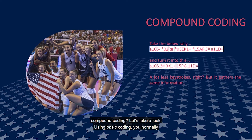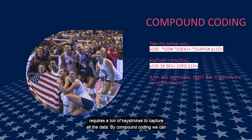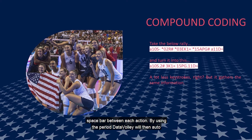Using basic coding, you normally designate whether the action was performed by the home or away team, the number of the athlete performing the action, what the action was, and then the resulting grade of that action. Each code is separated by a space. This requires a ton of keystrokes to capture all the data. By compound coding, we can link a number of these actions together using a period, rather than hitting the space bar between each action. By using the period, DataVolley will then auto-populate the subsequent action for you. By default,